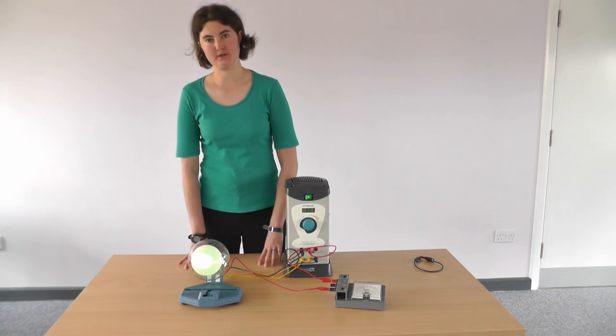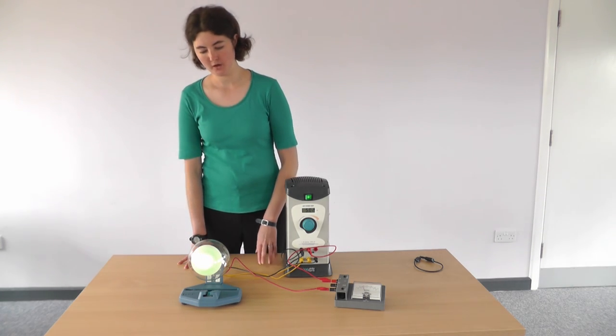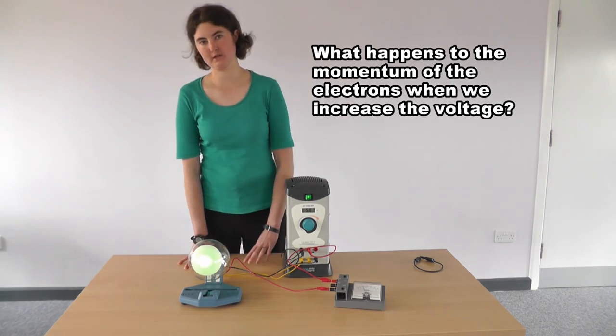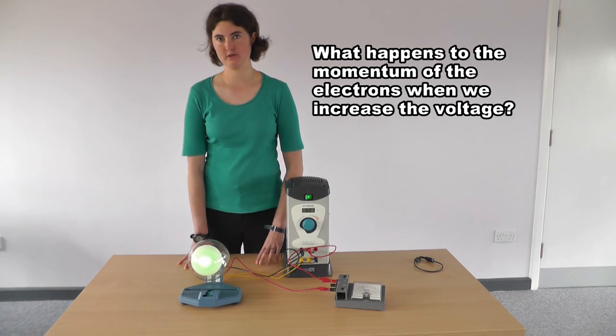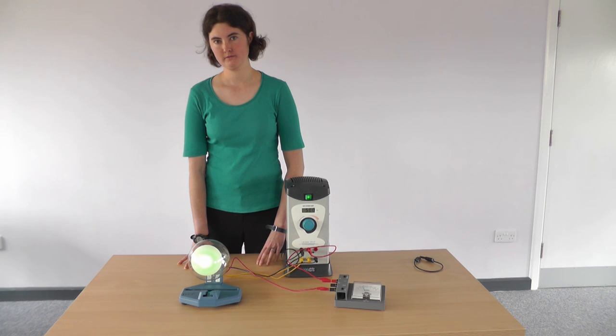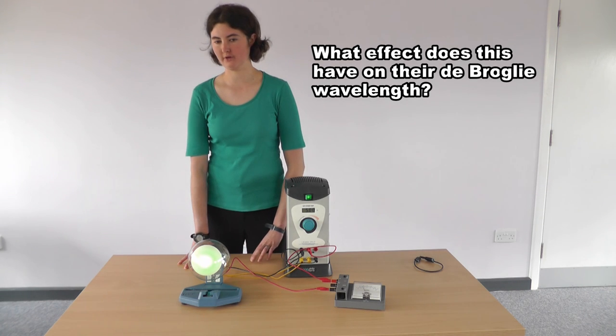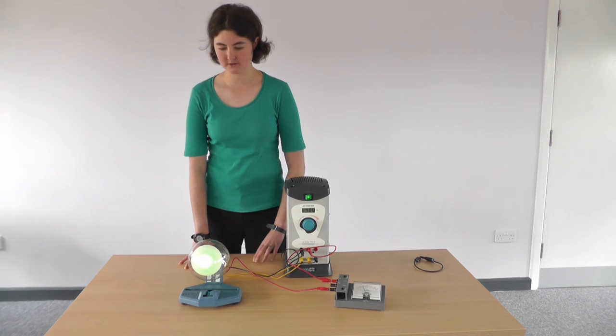Here are two simpler questions to help you. What happens to the speed and therefore the momentum of the electrons as the voltage is increased? What effect does this have on their de Broglie wavelength? The rest is over to you.